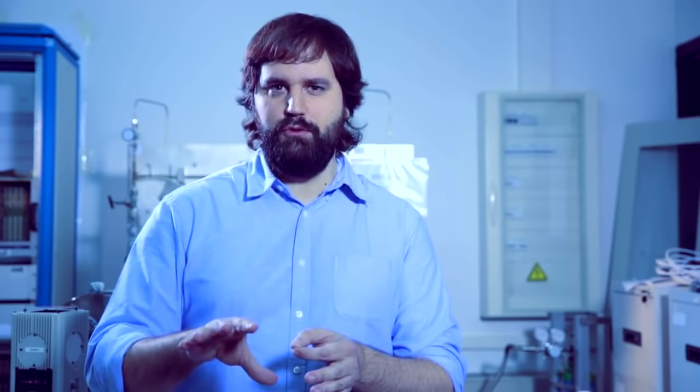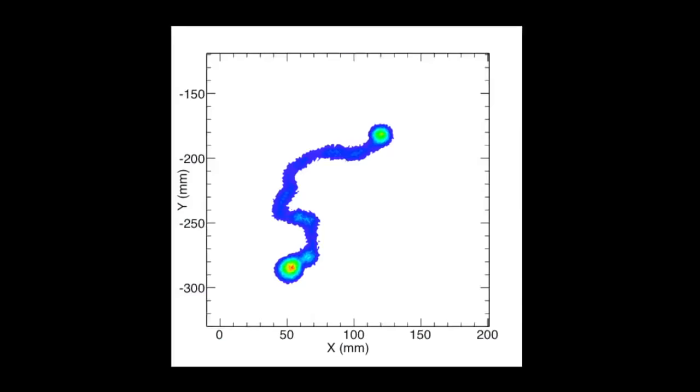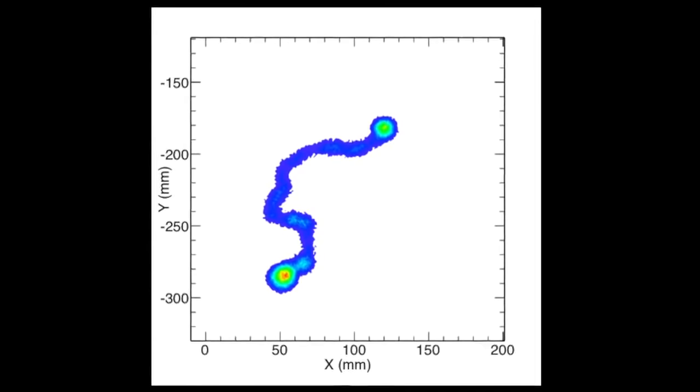So what we would expect to detect in NEXT, if a double beta decay happens, is to measure an event with the right energy, 2.5 MeV, and that it looks like two electrons coming from a common point. This, with the detector, we would take a picture of this event, and it would look like a long track with two blobs at the end.